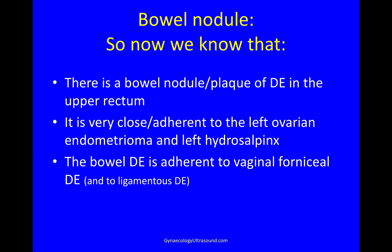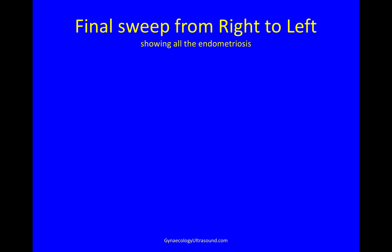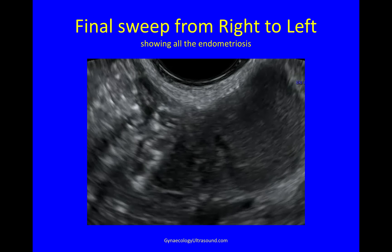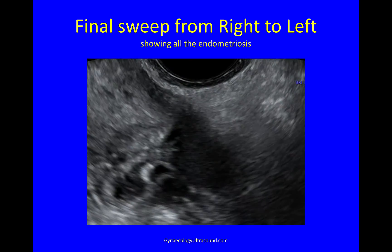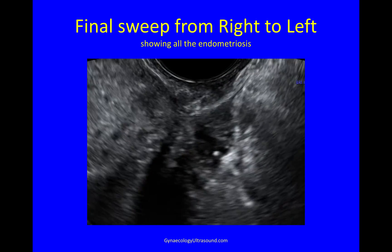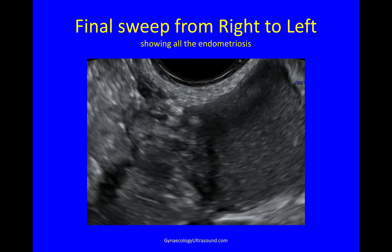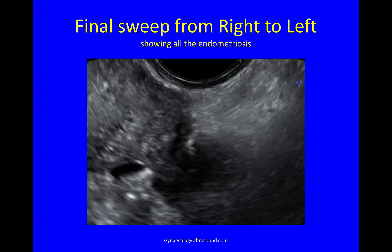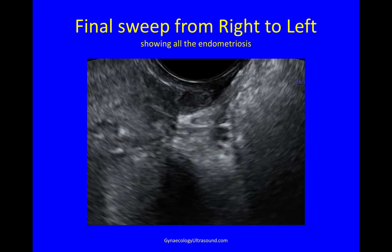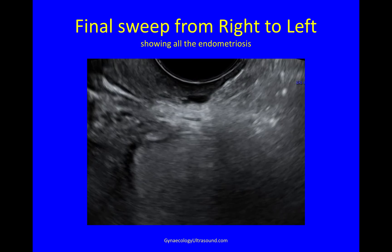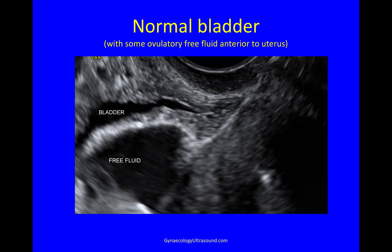So about the bowel nodule: there is a bowel nodule or a plaque of deep endometriosis in the upper rectum. It's very close and adherent to the left ovarian endometrioma and left hydrosalpinx. And this bowel deep endometriosis is adherent to vaginal fornix deep endometriosis and to some ligamentous deep endometriosis. A final sweep from right to left shows the right ovarian endometrioma, the right hydrosalpinx, the bowel nodule, the fornix involvement, and some deep endometriosis in the ligaments at the end. Once you've seen that it becomes easier — and you can see why I like to break it up into small areas.